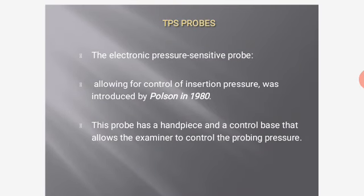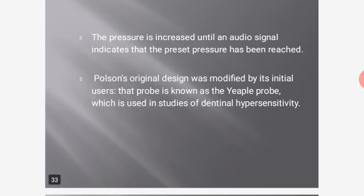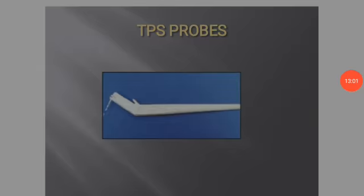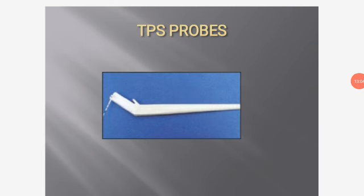The electronic pressure-sensitive probe, introduced by Paulson in 1980, has a handpiece and control base that allow the examiner to control probing pressure. The pressure is increased until an audio signal indicates the preset pressure has been reached. Paulson's original design was modified by initial users; the resulting probe is known as the Ippel probe, used in studies of dentinal hypersensitivity.